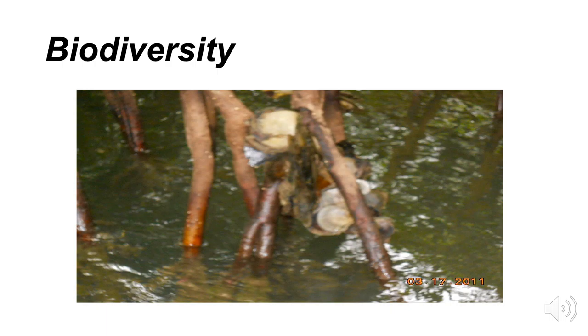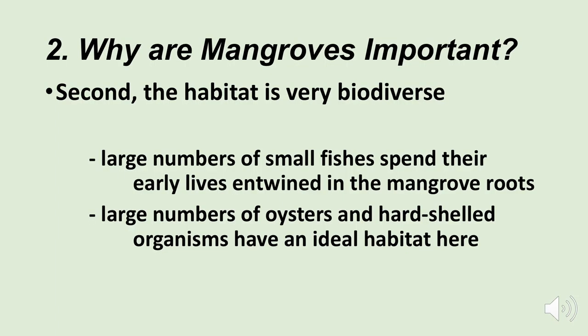Lots of aquatic and land-based species depend on mangrove swamps. Here's a photo showing mangrove roots along the coast with oysters that have found homes along the mangroves. If you visit mangroves, you'll be amazed at the biological life on the roots and between the roots — you'll see turtles, birds, and all kinds of land and water-based organisms. Large numbers of fishes spend their early lives entwined in the mangrove roots for protection. Large numbers of oysters and other hard-shelled organisms have an ideal habitat here.